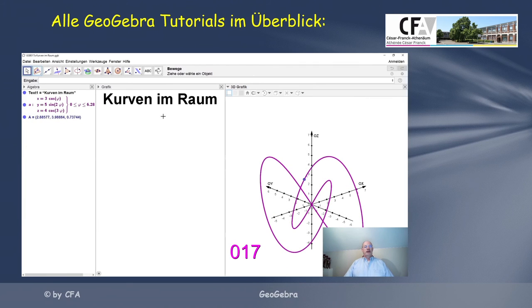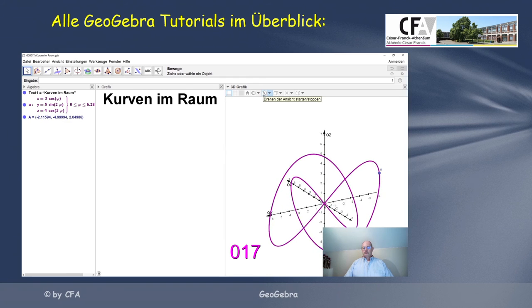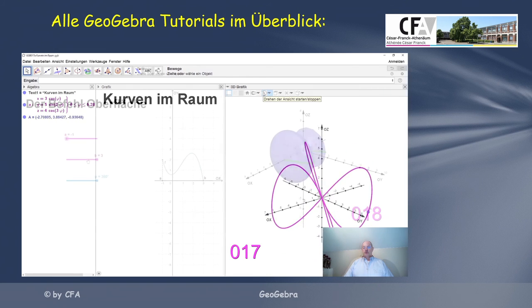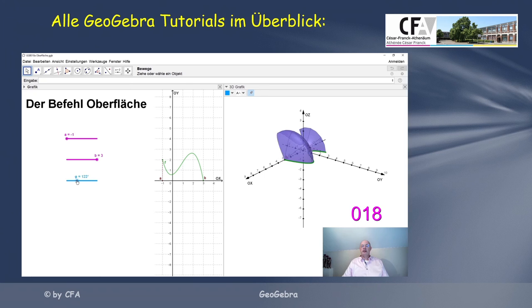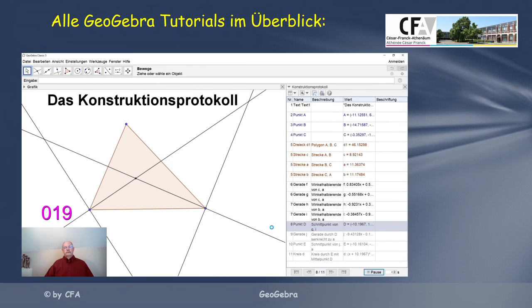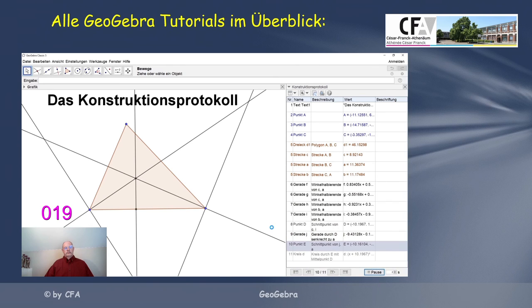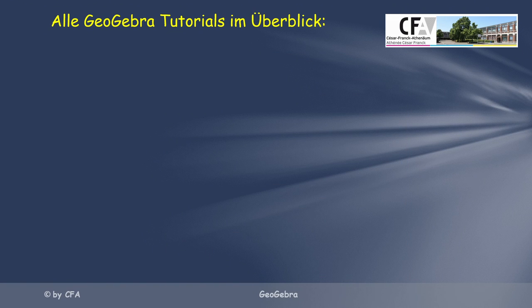Wir drehen das Ganze nochmal und sehen dasselbe für B. Wir können hier auch den Winkel Phi einstellen. Und fertig.